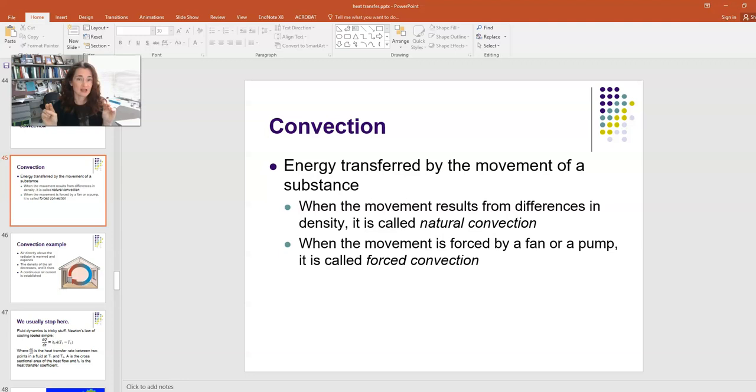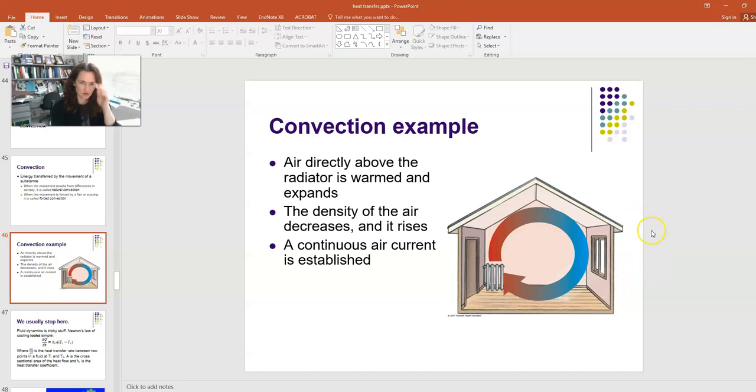So, that's a little cartoon here of the radiator. Basically, the radiator warming the air above it, rising up. And then, of course, as it gets further away from the radiator, it cools off, and then it falls back, and then you get circulation of air, a continuous current of air in your home. That's convection.